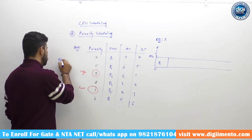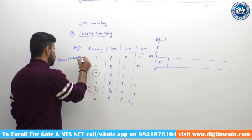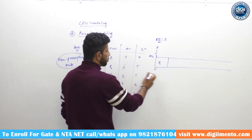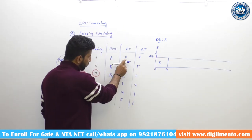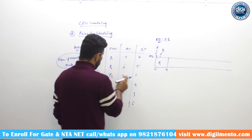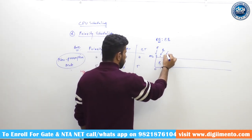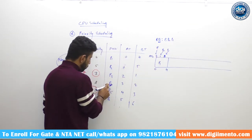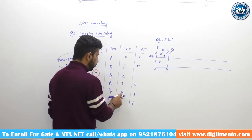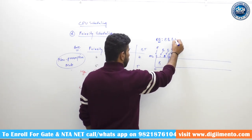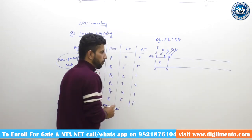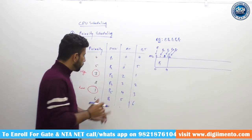We are solving this question in non-preemptive mode. P1 gets the CPU and executes for 4 units. During P1's execution: P2 enters the ready queue at time 1, P3 at time 2, P4 at time 3, and P5 at time 4. By the time P1 completes, all four processes P2, P3, P4, and P5 are in the ready queue.